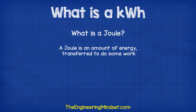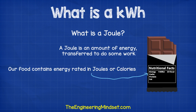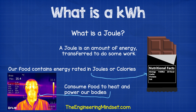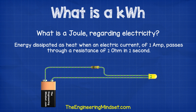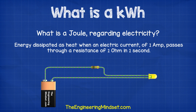What is a joule? A joule is an amount of energy transferred to do some work. Our food contains energy rated in joules or calories, and we consume this to heat and power our bodies. In electrical terms, a joule is the amount of energy dissipated as heat when an electric current of 1 amp passes through a resistance of 1 ohm for 1 second.